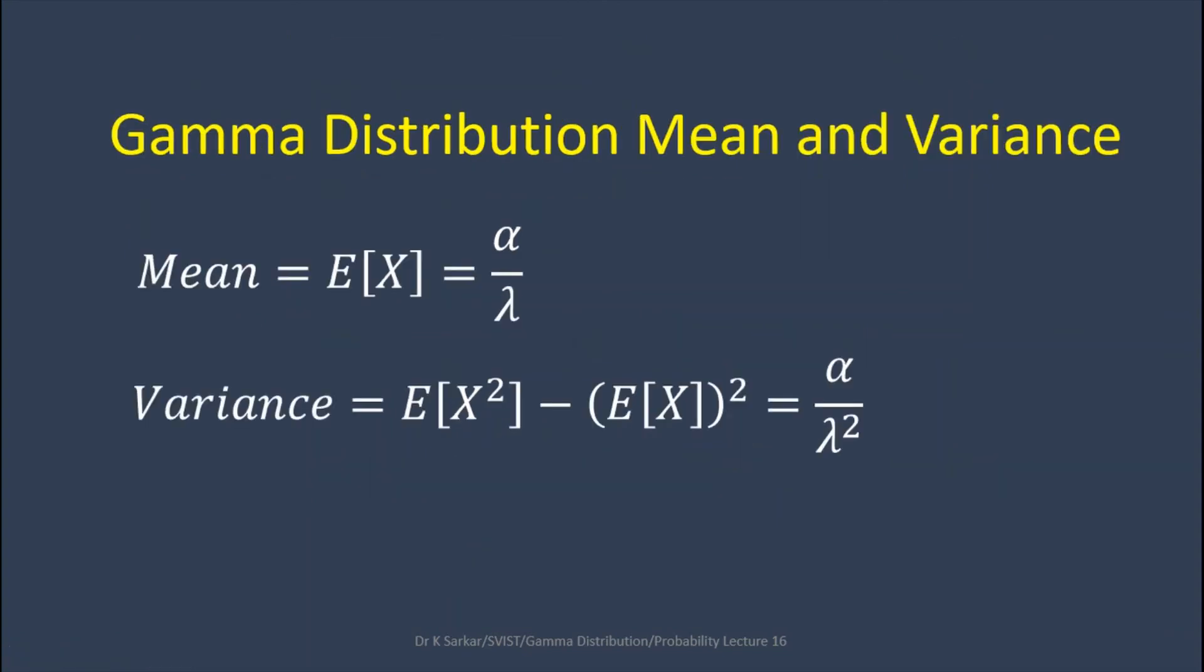Gamma distribution mean is alpha by lambda, and variance is alpha by lambda square.